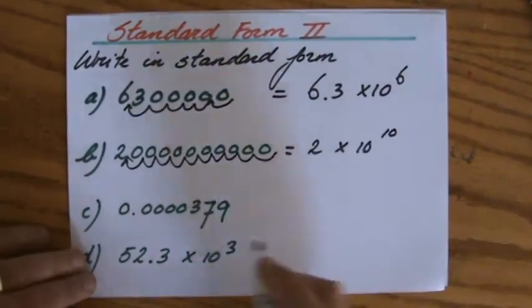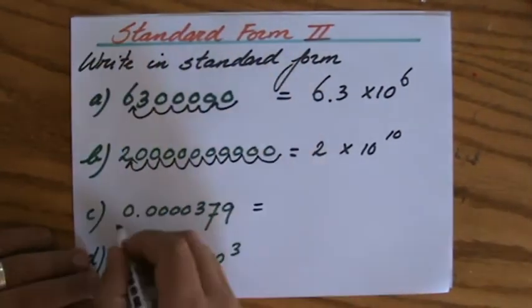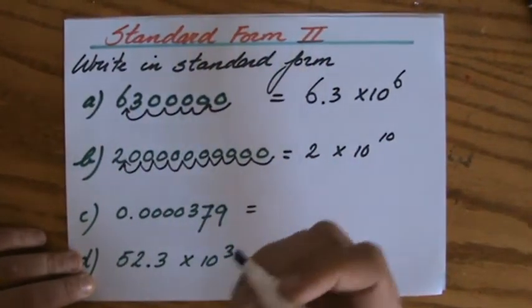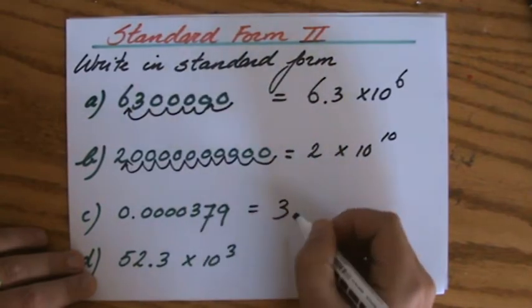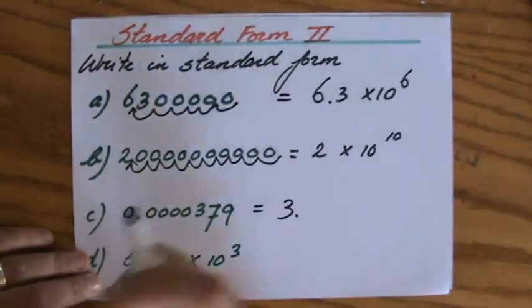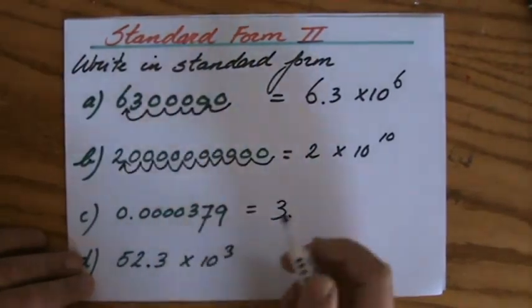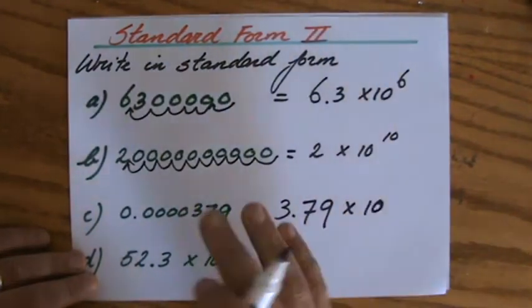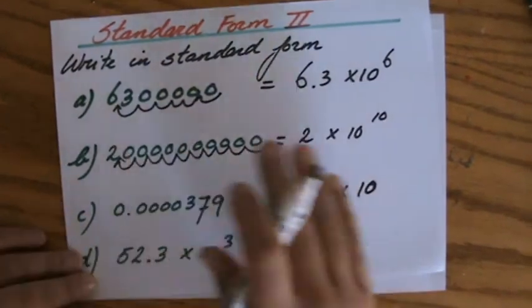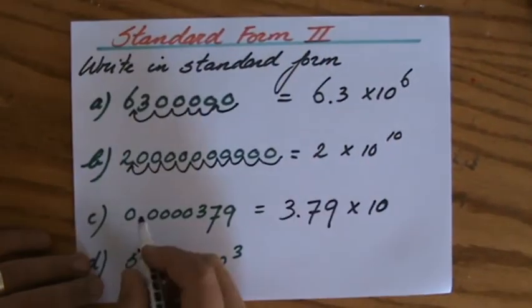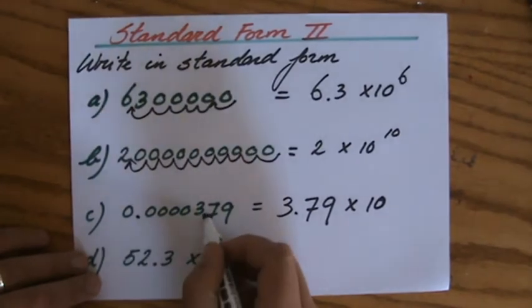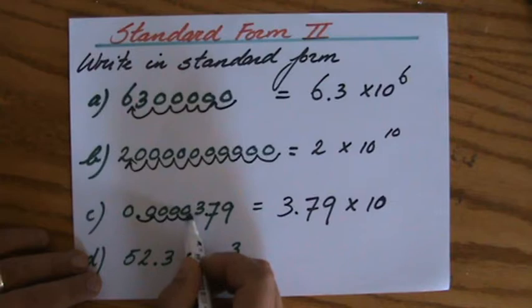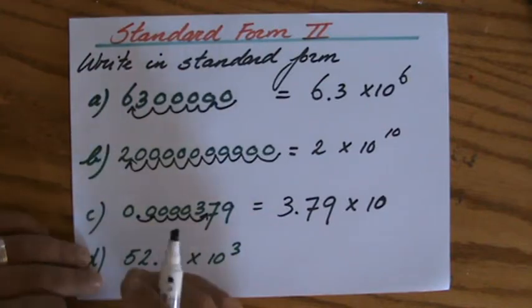Question C: a relatively small number. Standard form is always the first number integer, 3, followed immediately by the decimal point, then I have a 7 and a 9. Times ten to the power... I'm going to count how many places my decimal point moved. It used to be here, now it's between the 3 and the 7. So that moved one, two, three, four, five places. But because it's such a small number, it is to the power minus five.